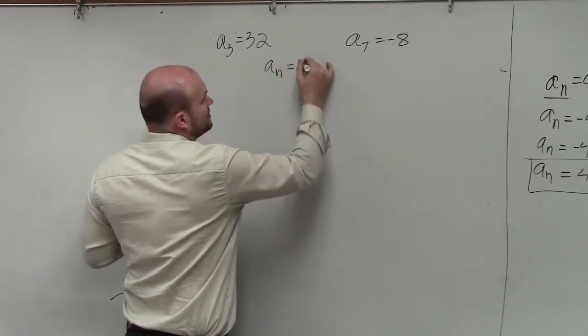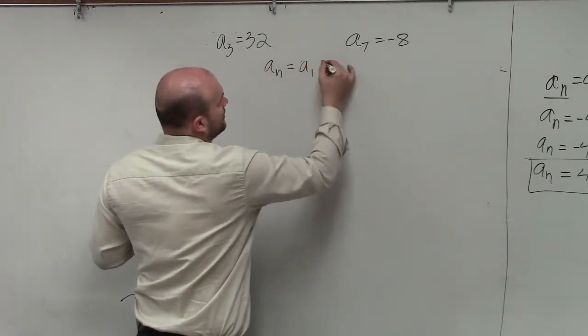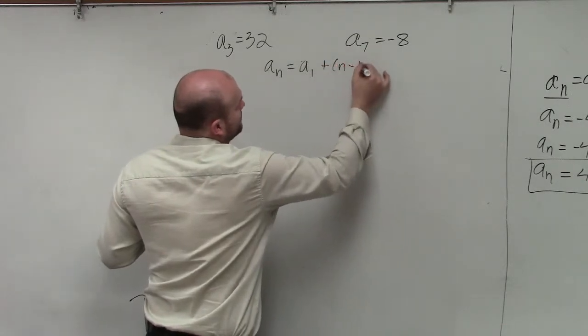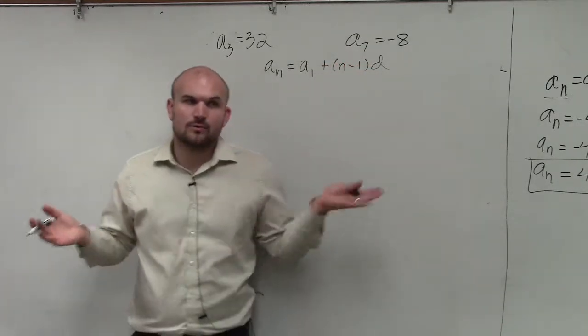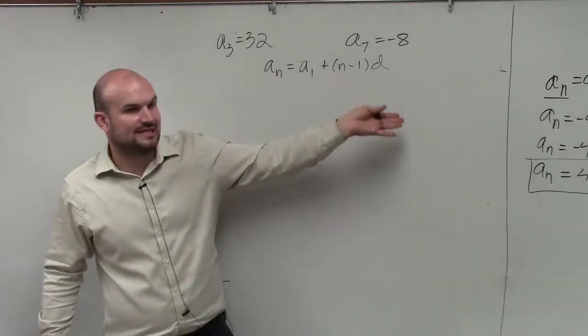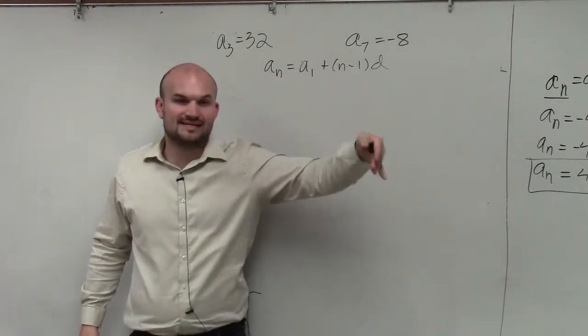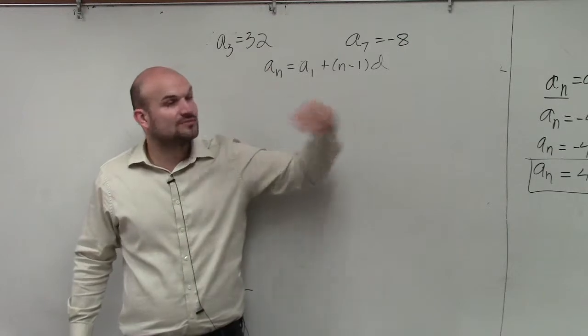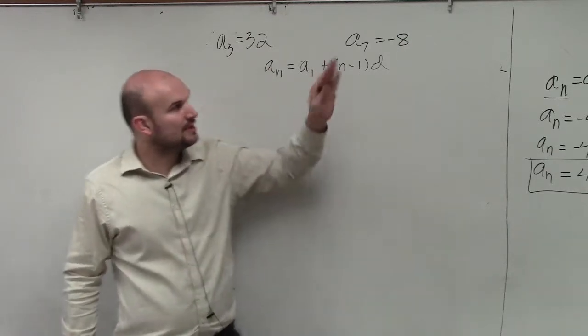a sub n equals a sub 1 plus n minus 1 times d. But again, we don't have any a sub 1 or d, so we need to determine what a sub 1 is, what d is, as well as what the explicit formula is.